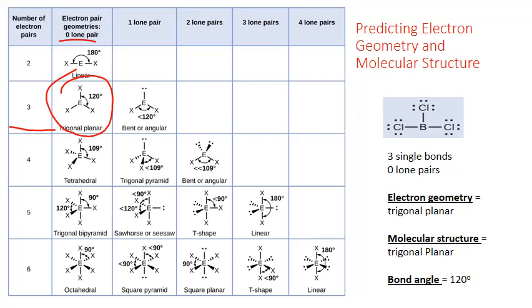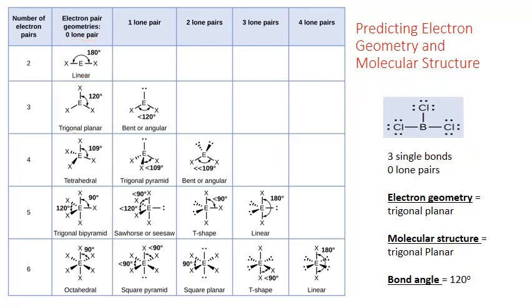Notice that the Lewis structure as drawn doesn't reflect that — we don't see a 120-degree bond angle. It's important to recognize that Lewis structures are not necessarily always drawn with the appropriate bond angle. You can certainly redraw them, and a better way to draw this structure would show the correct 120-degree geometry.